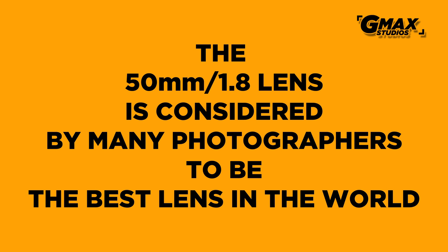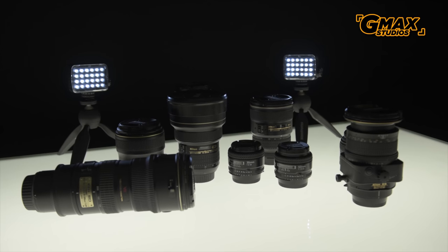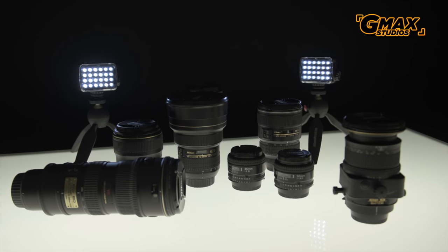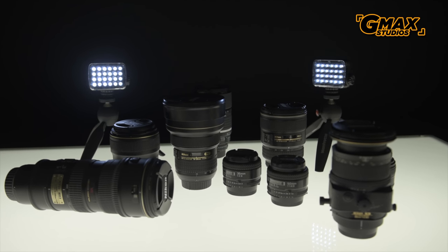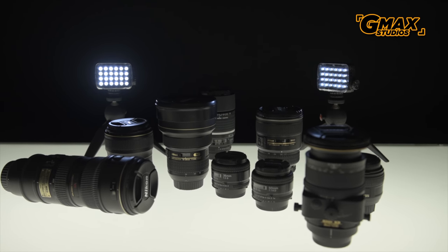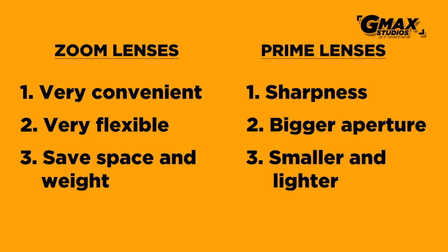One exception is the 50mm f/1.8, which is considered to be the best prime lens in the world by many, including myself — if you want to know why, there's a link in the description below. Usually prime lenses are also smaller than zooms, so if you want to carry a light bag or don't want to attract too much attention to your equipment while shooting, you can just put on a prime lens and start shooting. The smaller size and lightweight is a great asset while doing street photography.